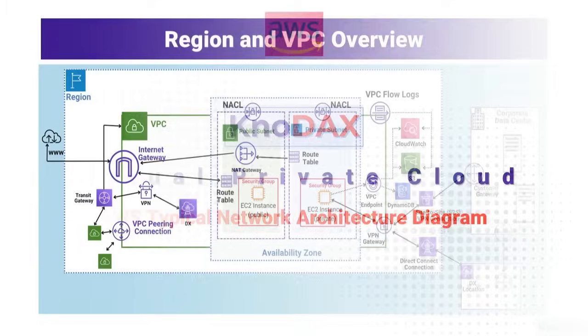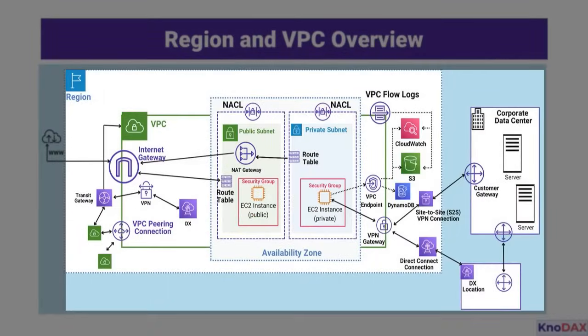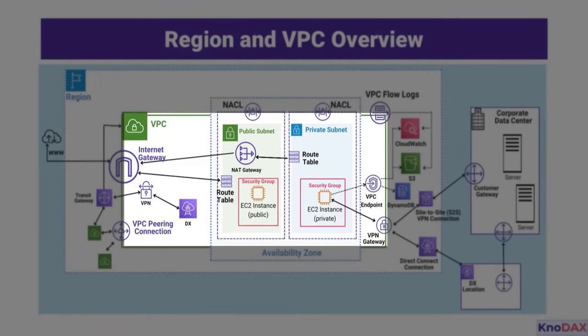We begin within the AWS region, which houses a Virtual Private Cloud (VPC). This VPC is a logically isolated network, providing the foundation for resources within this architecture.